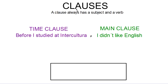First let's talk about clauses. What is a clause? A clause always has a subject and a verb, so basically a clause is like a sentence. If we look at this sentence, I have a time clause and a main clause. I say, 'Before I studied at Intercultura, I didn't like English.' I use this time clause because I'm talking about a specific time using 'before,' and notice I'm using a comma to separate my time clause and my main clause.